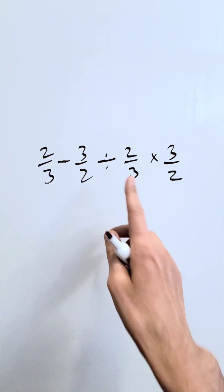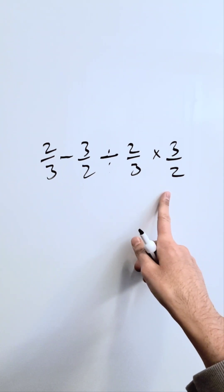Let's examine this. I have 2 over 3 minus 3 over 2 divided by 2 over 3 times 3 over 2. How do we do this?